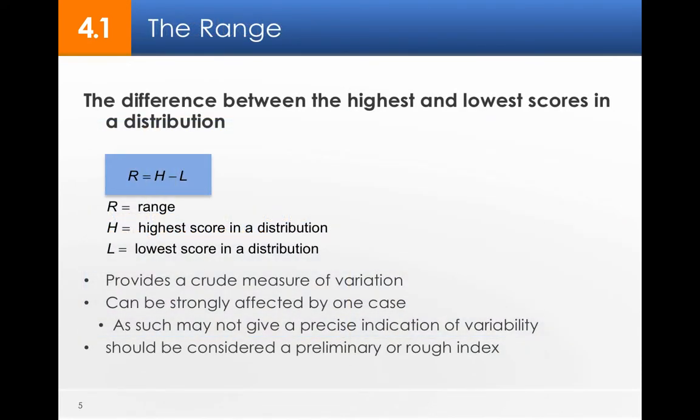So the range is the difference between the highest and lowest score. This is very easy to calculate. Just take the highest score, subtract the lowest score. It's a very crude measure. Say the test scores ranged from 90 to 40, the range is 50. One case can strongly impact that, so it doesn't really give us a good precise indication of variability.